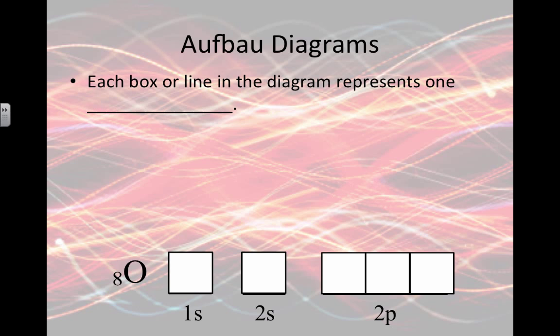We represent this with Aufbau diagrams, or we call these orbital diagrams, where each box or line in the diagram represents one specific orbital.